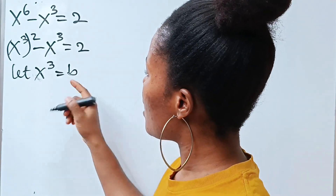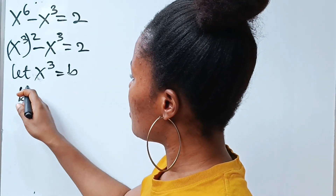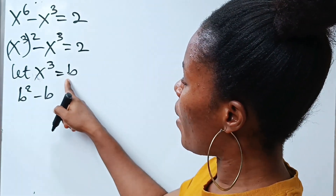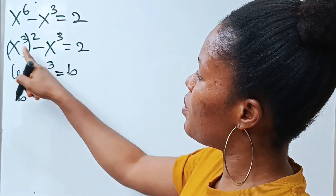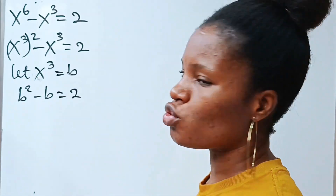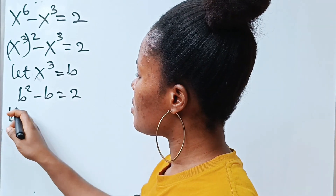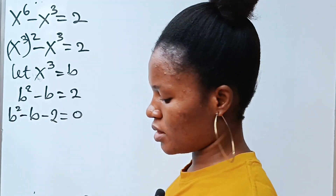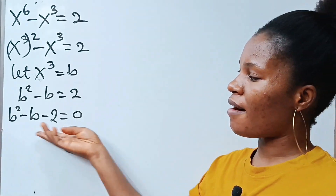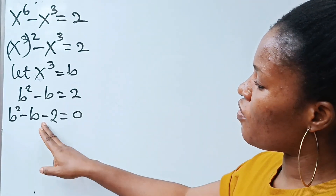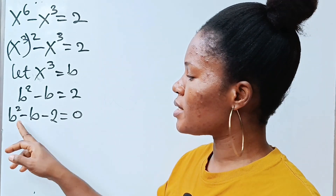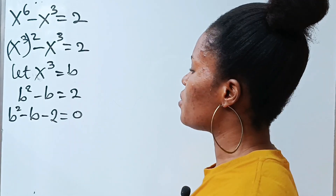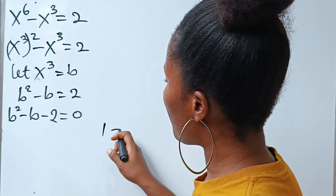Since x to the power of 3 is b, it's b squared minus b is equal to 2. That means we can write this as b squared minus b minus 2 equals 0. Now let's factorize this — we need two factors of negative 2 that when added give us minus 1, which is the coefficient of b.